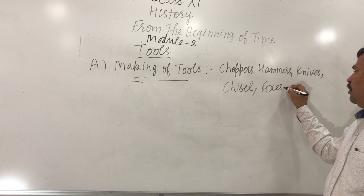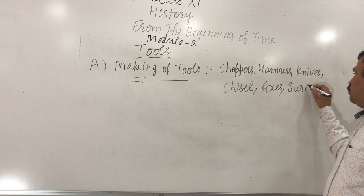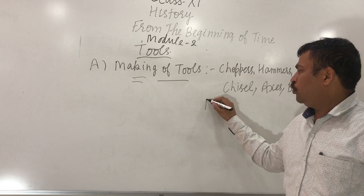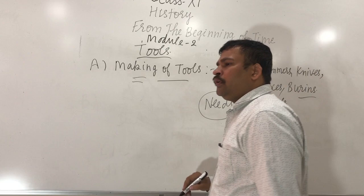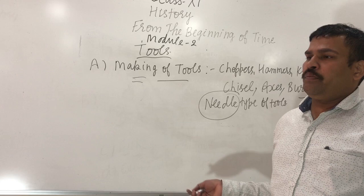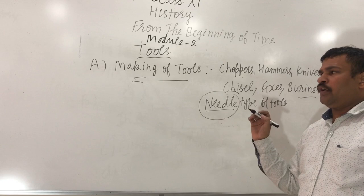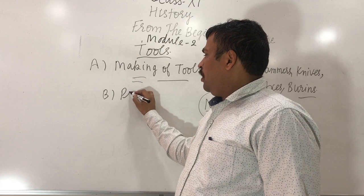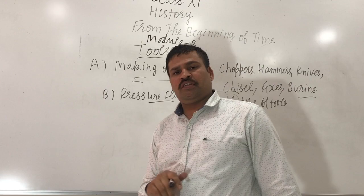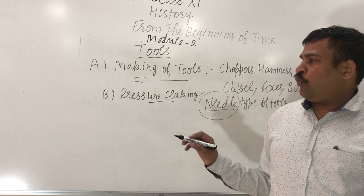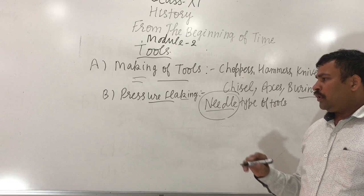Tools such as axes were found. Even needle-type tools were also found. Because as human beings progressed, they were aware about these. Another method used was pressure flaking - tools were taken with sharp edges so they could make holes and adjust those materials. These types of tools were found and they were very helpful and very important.